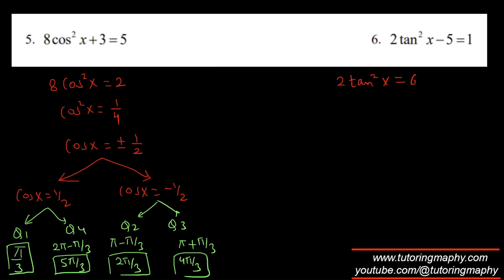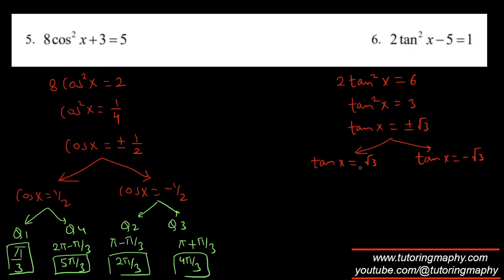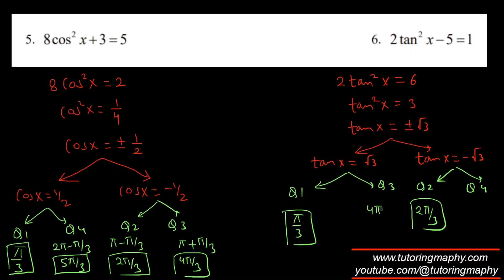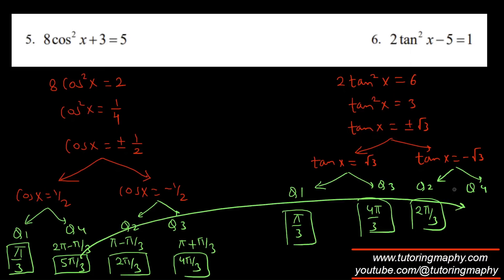Adding 5 to both sides gives 3, dividing by 2 gives 3, taking square root gives tan(x) = ±√3. Again ±, so solutions in all four quadrants. The reference angle for √3 is π/3. Quadrant 2: 2π/3; quadrant 3: 4π/3; quadrant 4: 5π/3 — the same four angles as the previous problem.